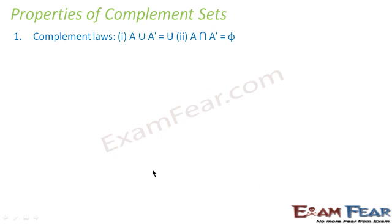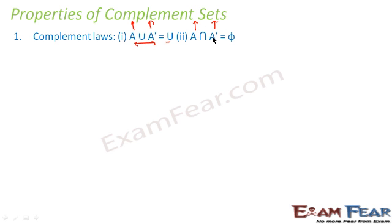Properties of complement: A union A complement equals U, because A covers all elements in A and A complement covers U minus A, so together they give U. A intersection A complement equals phi (empty set), because there is no common element between A and A complement.